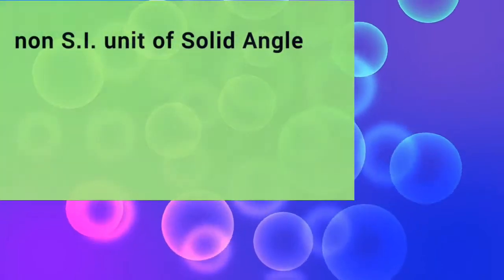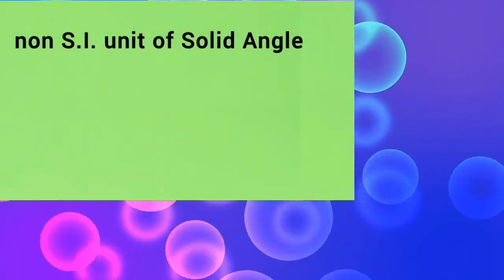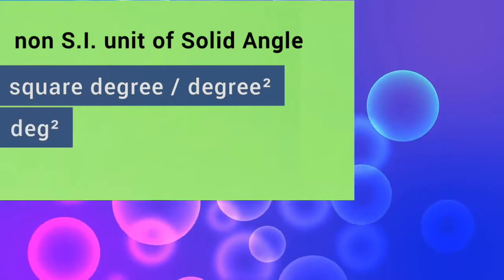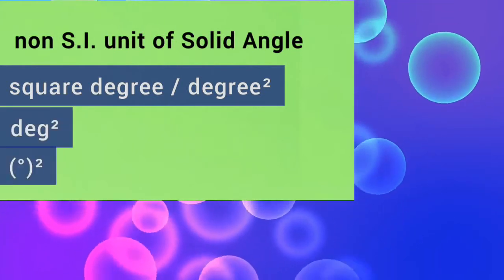Note that there is a non-SI unit of solid angle. It is called square degree or degree square, and symbolizes with deg square. And denoted in bracket degree square.